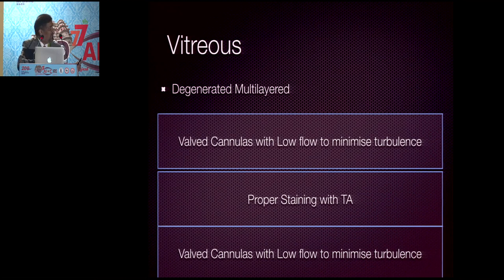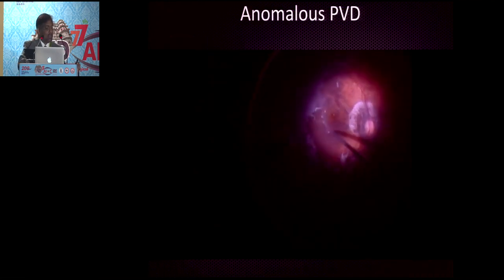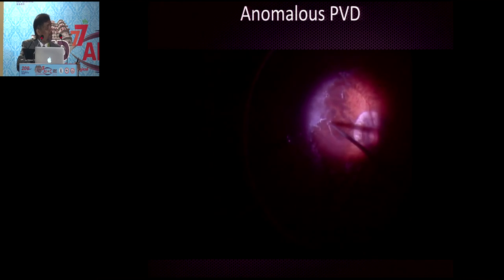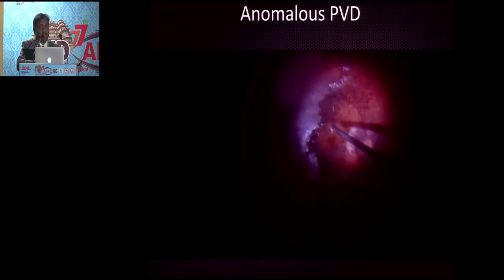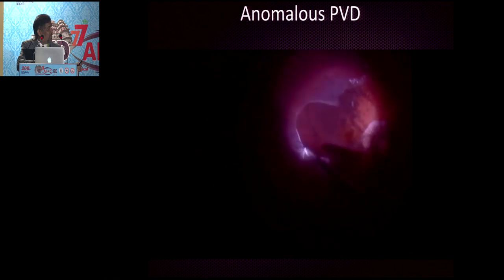The most challenging issue is the vitreous — it is degenerated and multilayered, with a lot of turbulence at high flow. Use valved cannulas with low flow to minimize turbulence, and have proper staining with triamcinolone. In spite of doing a core vitrectomy and removing the Weiss ring, when you stain with triamcinolone, you find anomalous PVD attachments that need thorough peeling of the posterior vitreous.